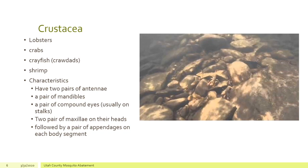Another arthropod we want to look at is crustaceans. There are lobsters, crabs, crayfish — some of you refer to them as crawdads — and shrimp. They have two pairs of antennae, a pair of mandibles for mouth parts, a pair of compound eyes usually set out on a stalk, and two pairs of maxillae on their heads, followed by a pair of appendages on each of their body segments. And if you look at these, you can see those.